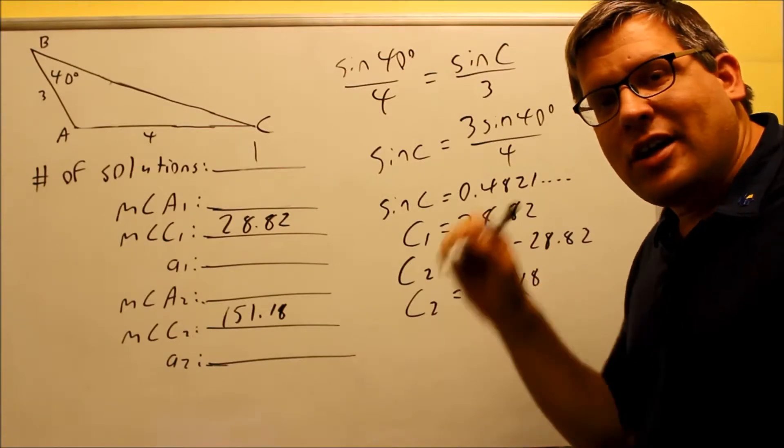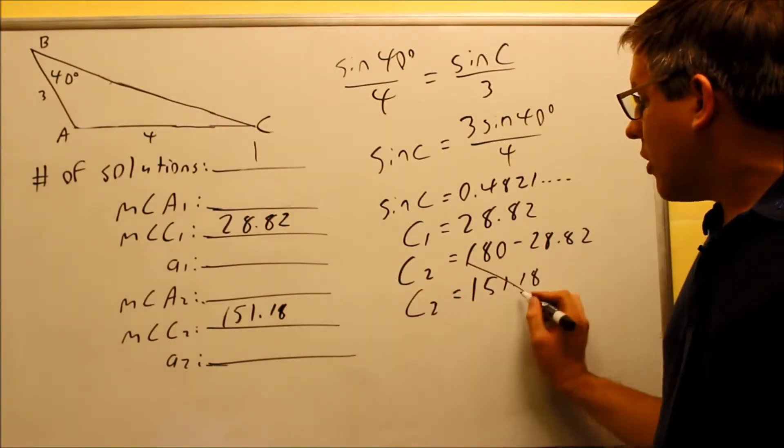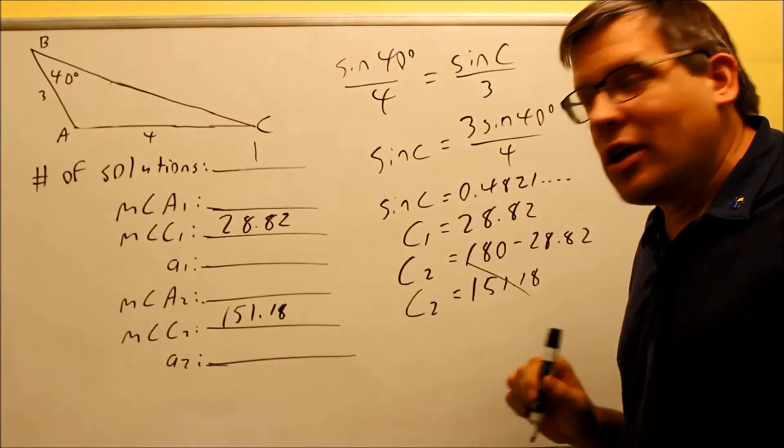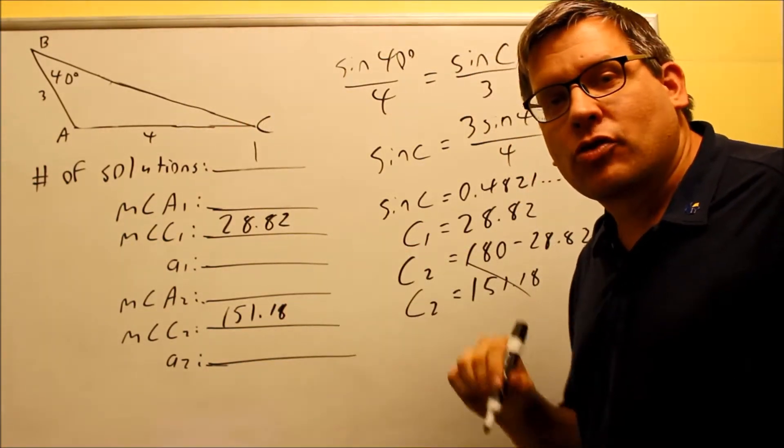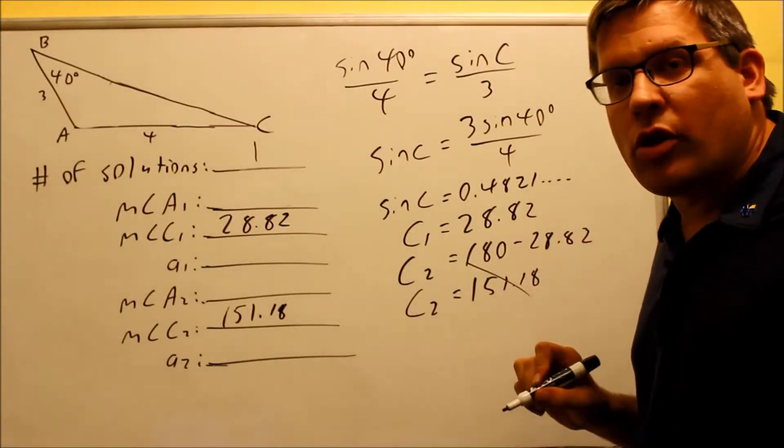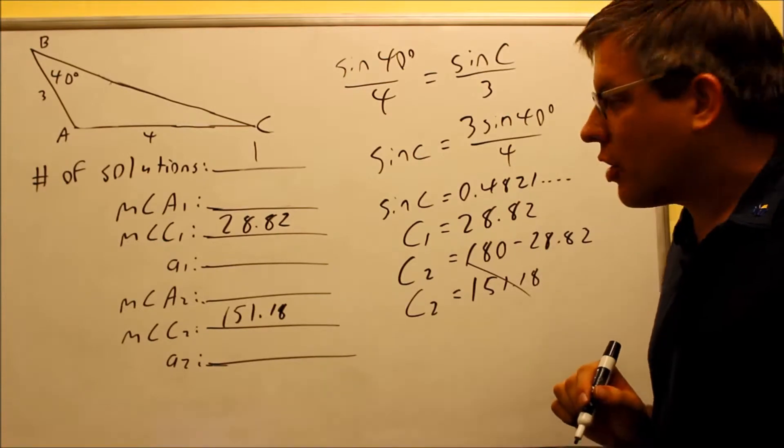So again, just to repeat that, here's how you can tell whether you have one or two solutions. When you find your secondary solution, you're going to add it to the angle that's already in the triangle already. If when you add those together, if your result ends up being more than 180, then you know for sure that that's not going to be a solution. So therefore, we can cross that one out. So therefore, I know that there's only going to be one solution on this particular problem.